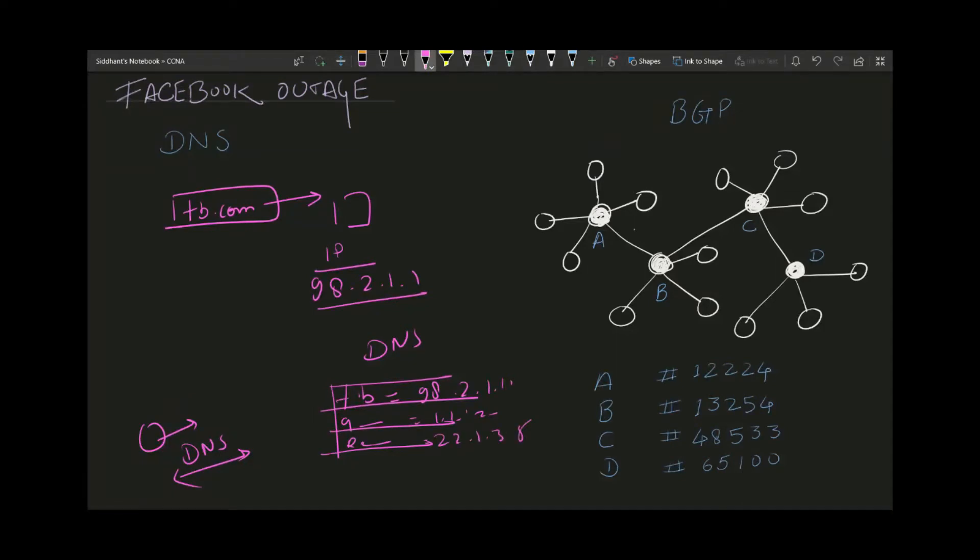The DNS server is nothing but like a phone book of the internet, like your contact list. You cannot easily remember all the contacts, but you can easily remember the names like Facebook, Google, or Reddit. The job of DNS is just to convert your name to an address. Then your PC will get that address and send a request to take me to this address 98.2.1.1. From here your PC will throw it out to your router which is sitting in your home.